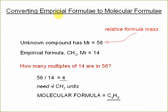So to convert the empirical formula into molecular formula, we're going to need the relative formula mass, the Mr value of the unknown compound. So from that previous example, if that came in as being 56, we knew that our empirical formula just for the CH2 unit was 14. So we'd need to think how many multiples of 14 are in 56.